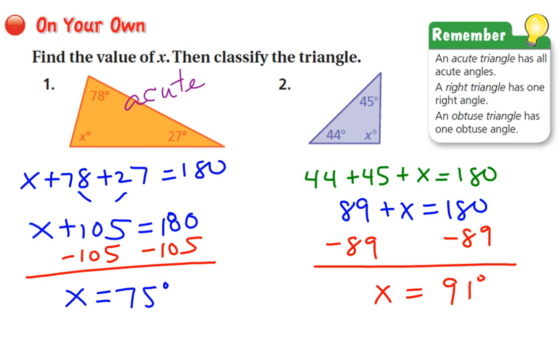And in question two, our missing angle was 91. So since it's greater than 91 degrees, and not equal to 90 degrees, this is actually an obtuse triangle.